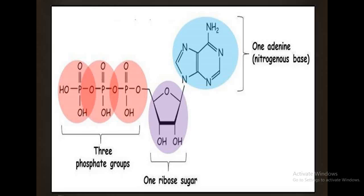If I remove the phosphate group, then we have only the base and sugar. Base and sugar together we call a nucleoside. So: base plus sugar equals nucleoside, while base plus sugar plus phosphate group is called nucleotide.